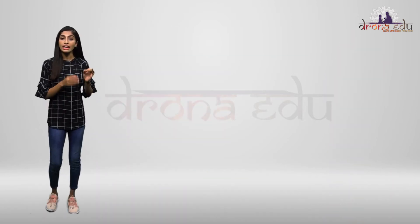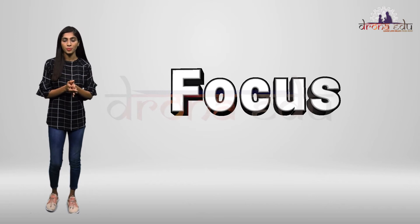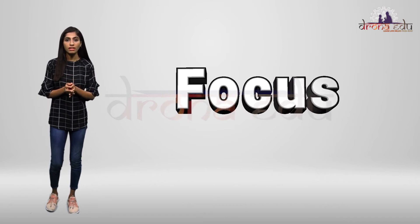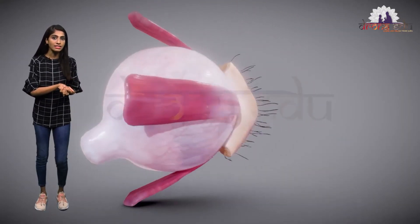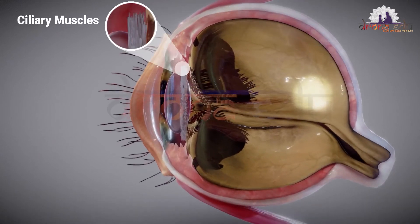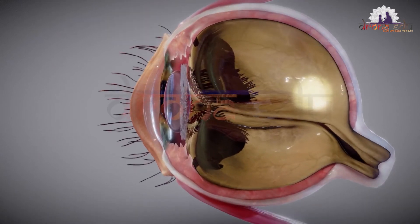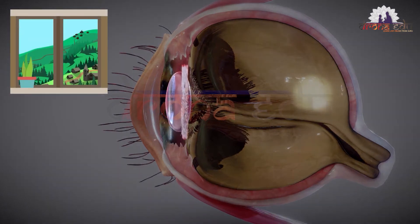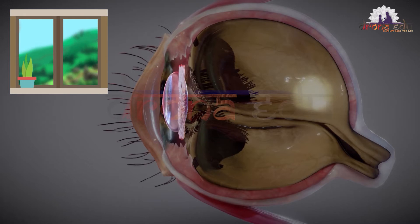The third step is to focus. How is focusing done in our eyes? It is with the ciliary muscles that we have. The ciliary muscles will be relaxed when we are looking far away, and they will pull with the help of suspensory ligaments. The lens will be pulled by the ciliary muscles when we are looking at nearer objects.